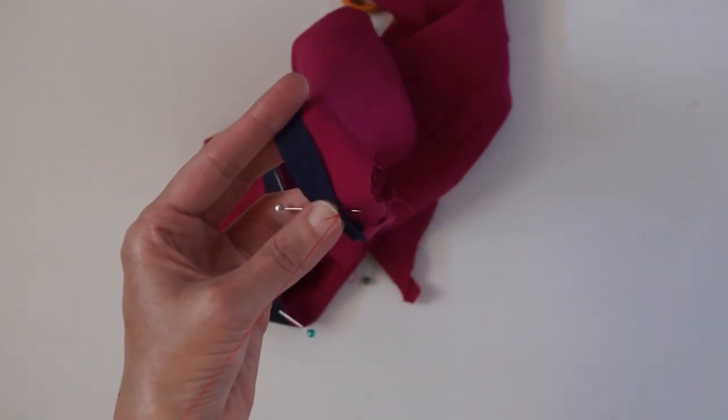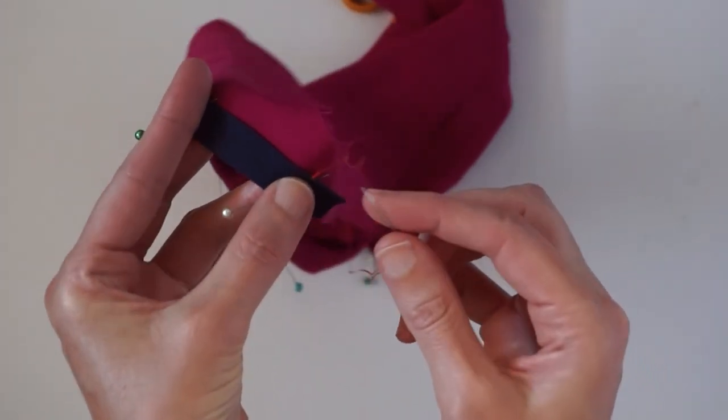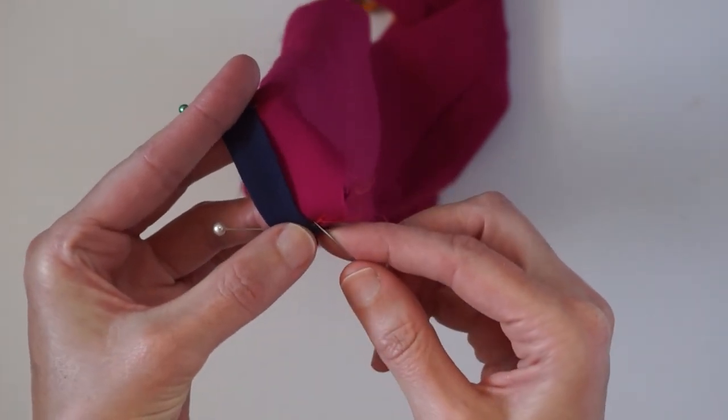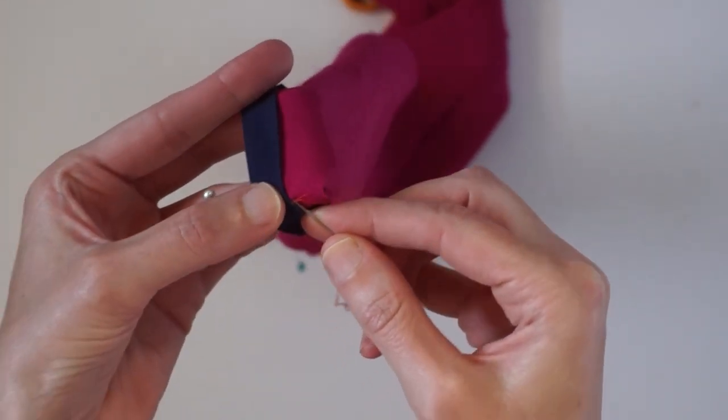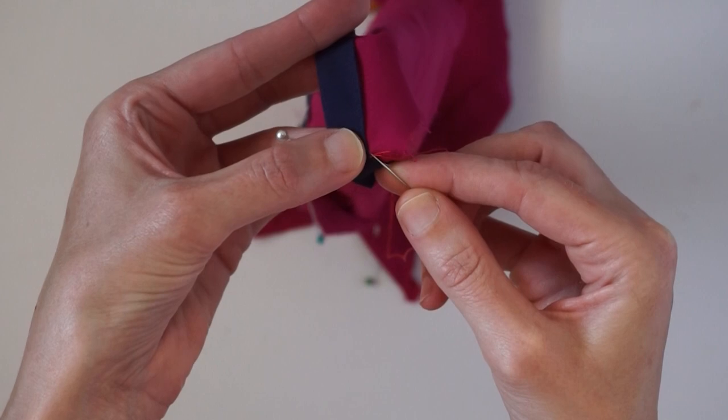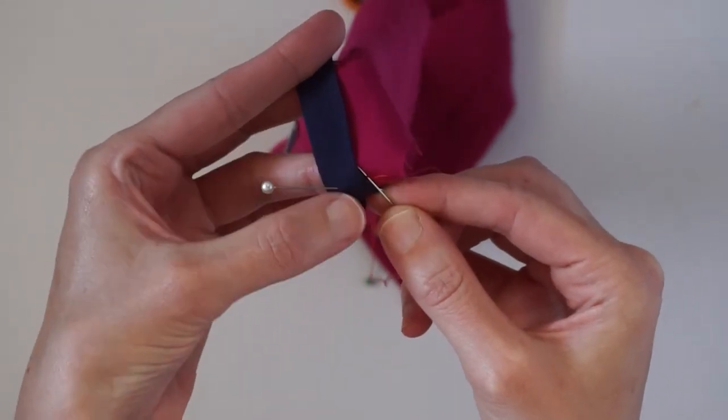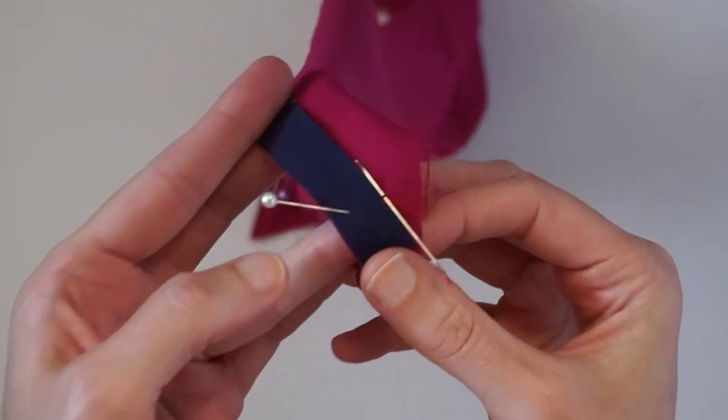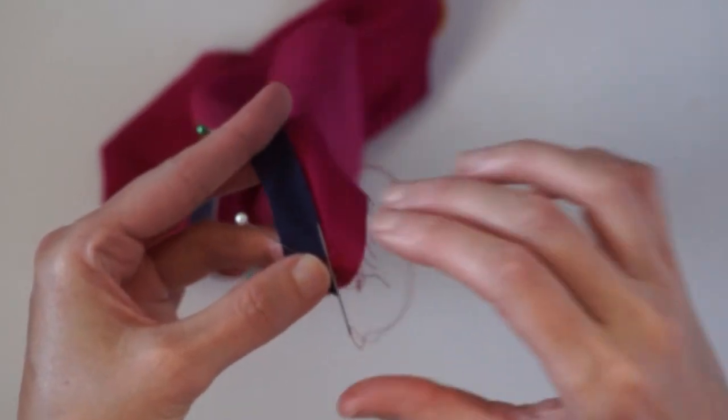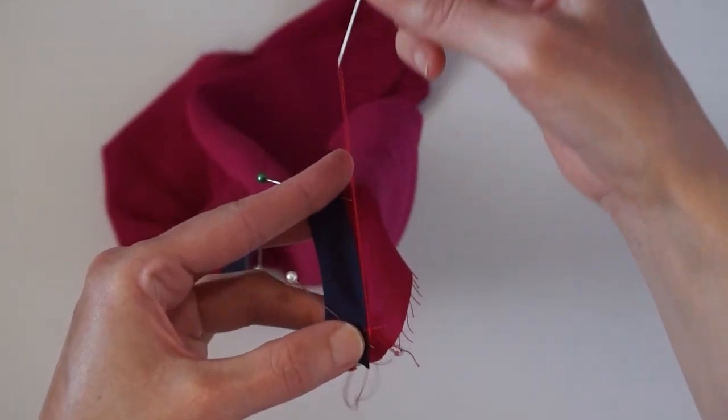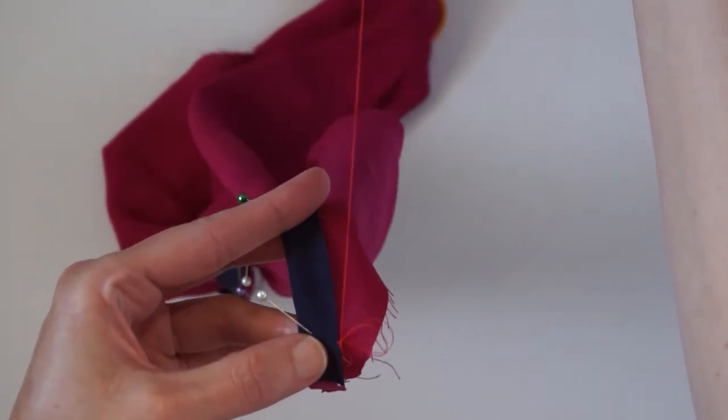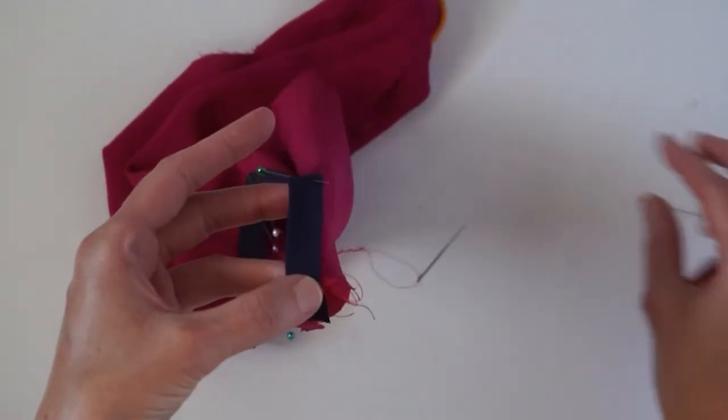We have that little knot there, and then I'm going to take my needle really close to this knot. I'm going to pick up just one or two threads of my garment. You want to take just as few threads as possible and pull your needle through.